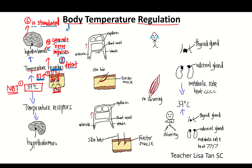From the hypothalamus, nerve impulses are sent to the relevant parts of the body. This will stimulate vessel dilation of arteriole in the skin — the arteriole in the skin dilates and widens, so more blood flows there. And the shunt vessel, which connects the arteriole to the venule, constricts.